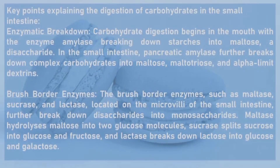Key points explaining the digestion of carbohydrate in the small intestine: 5. Enzymatic breakdown: Carbohydrate digestion begins in the mouth with the enzyme amylase breaking down starch into maltose, a disaccharide, in the small intestine. 5. Pancreatic amylase: Pancreatic amylase further breaks down complex carbohydrates into maltose, maltose, and alpha-limit dextrin.